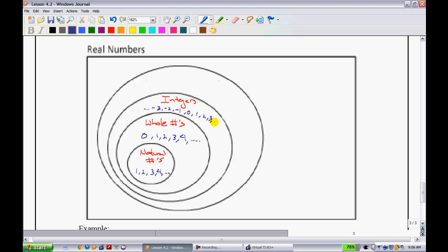1, 2, 3, dot dot dot. So those are integers. And if you notice, natural numbers are part of whole numbers, and the whole numbers are also part of the integers.